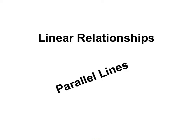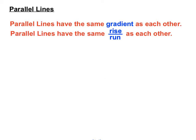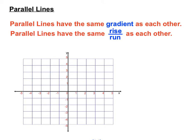This is a linear relationships video on parallel lines. Parallel lines have the same gradient as each other. They have the same slope. They have the same rise over run as each other. Let's have a look.